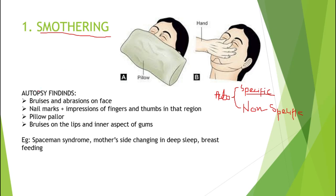Specific autopsy findings in smothering include bruises and abrasions around the nose and mouth, nail marks around the nose and mouth, impressions of thumbs and fingers in that region, and pillow pallor. Pillow pallor means that if a soft material like a pillow is used, signs of pallor will be seen in the area around the mouth and nose.